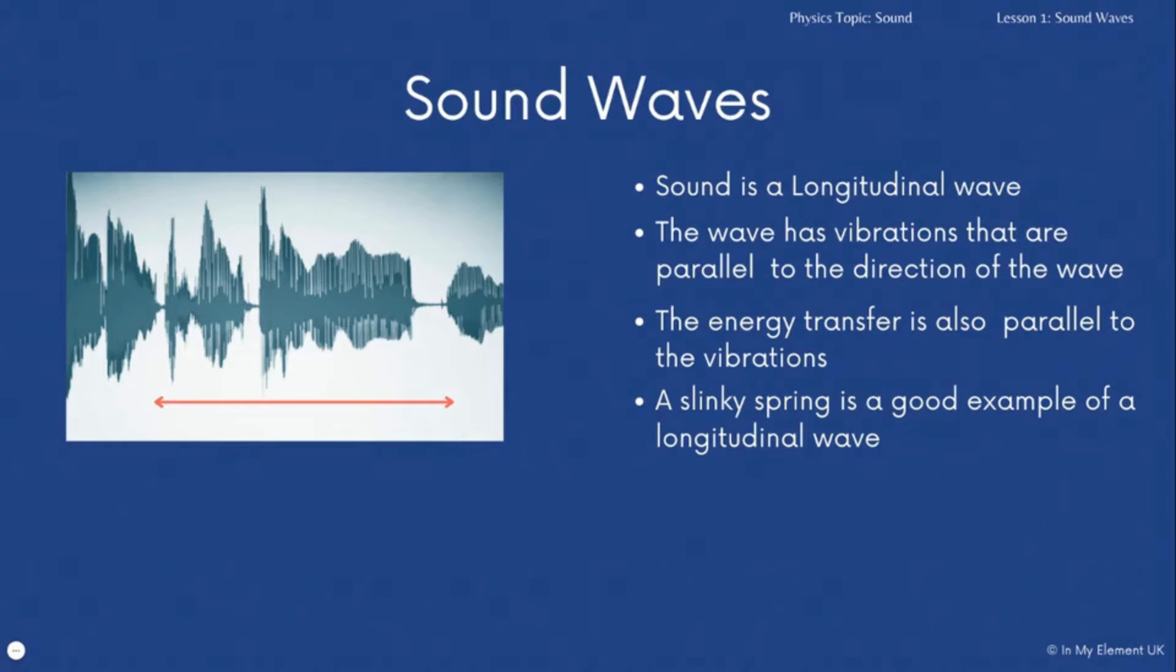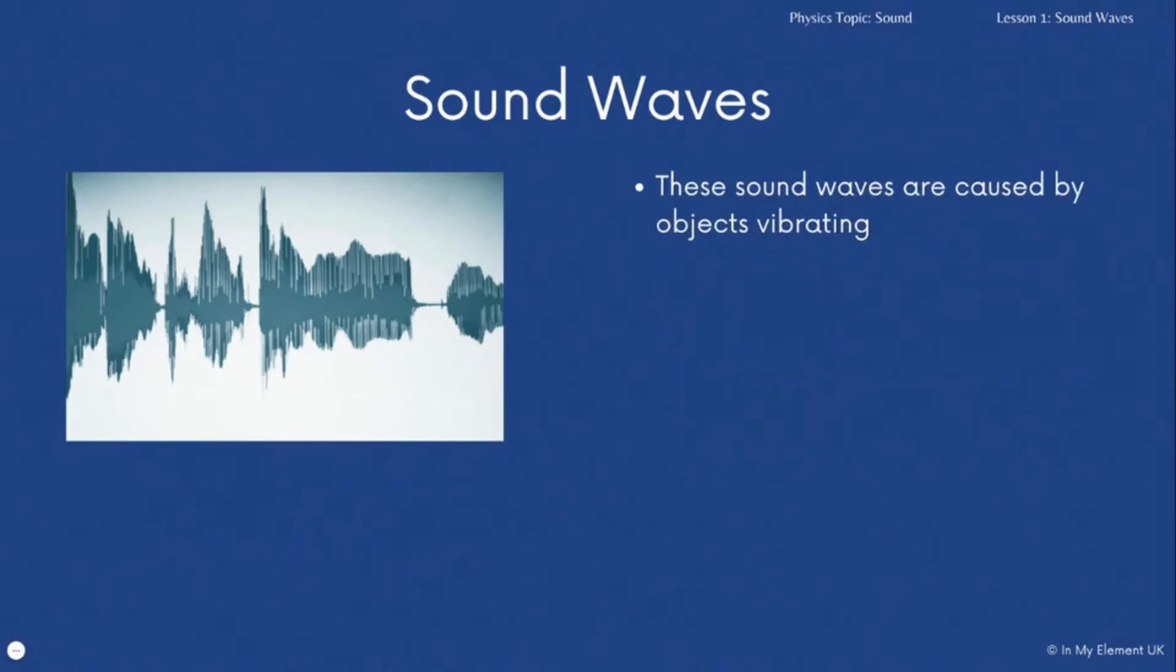The slinky spring is a really good example of a longitudinal wave and you can use it to look like this image here showing the compressions where it groups together. The red arrow is showing you that the vibrations are in the same direction the wave is traveling, and that's really important. The vibrations are key to these sound waves because sound waves are caused by objects vibrating.